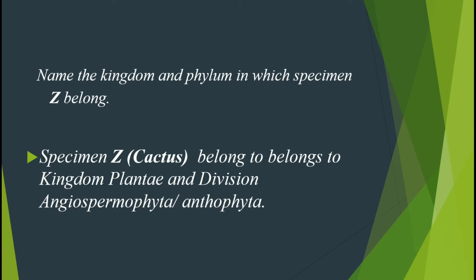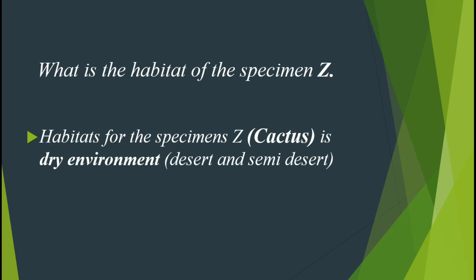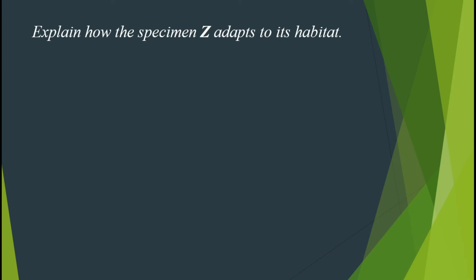The third question is asking us what is the habitat of specimen D. The habitat of specimen D, which is cactus, is in a dry environment — a desert or a semi-desert.